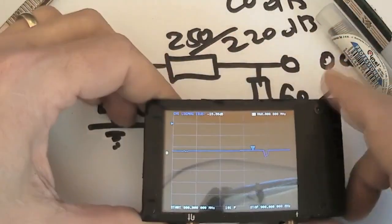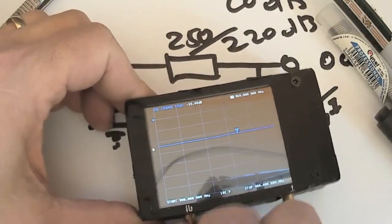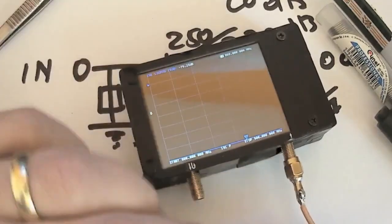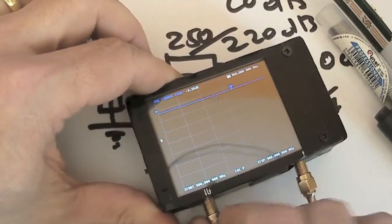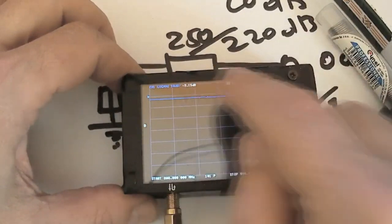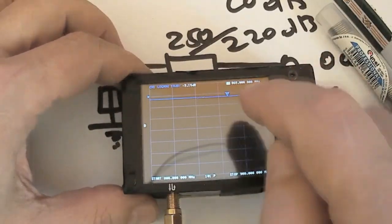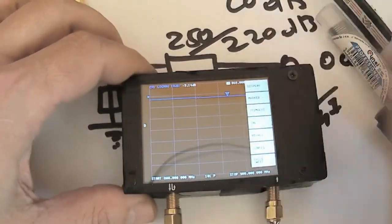Let's see about a direct connection between port one and port two. There we go. Because of the cable, we have a minus 3.15 attenuation at 868 megahertz. And by the way, we can very nice and easy see the cable attenuation and the connectors.